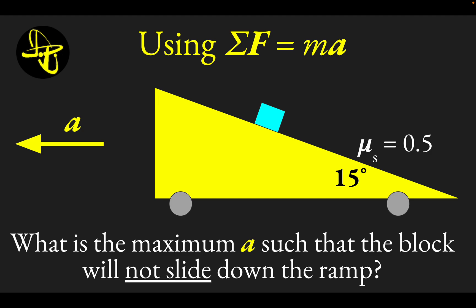All right, my friends, we're going to look at a worked example of using F equals ma to solve for how a system will move. Specifically, we have a block on a ramp, and the entire system is pulled to the left with some acceleration. We're going to find the maximum acceleration such that the block will not slide down the ramp.